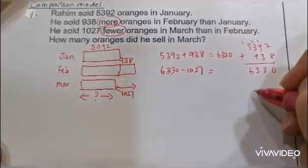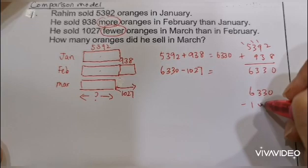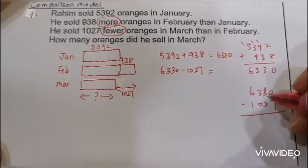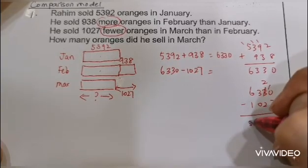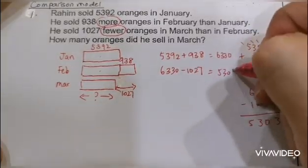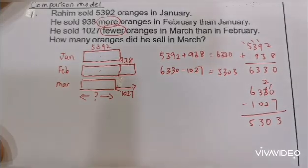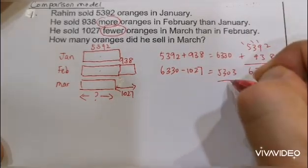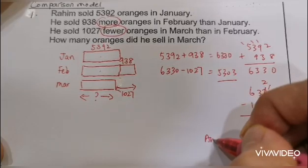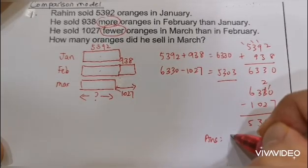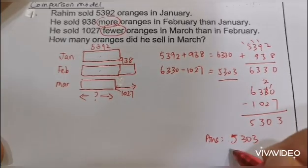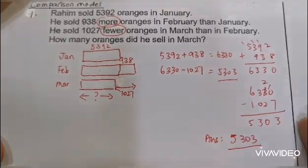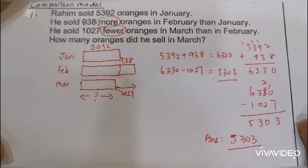Take away from here — make sure you do your workings properly and don't make any careless mistakes. You can try the workings on your own. The final answer: he sold 5,303 oranges in March. Write down your number statements and your word statements.